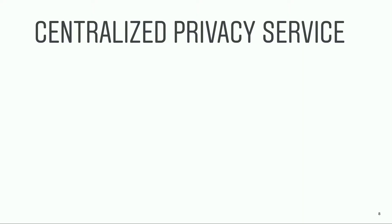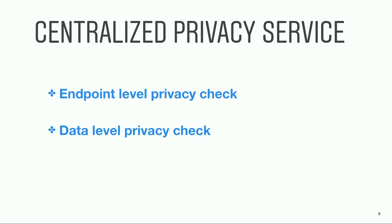There are many ways of building a centralized privacy service and we have mainly explored two: endpoint-level privacy check versus data-level privacy check. With endpoint-level design, privacy rules are defined at each endpoint and privacy checks are done before sending the response to the client. With data-level design, privacy checks happen explicitly at data fetching level, and any contents that do not pass a privacy check will get filtered out before reaching the production code.